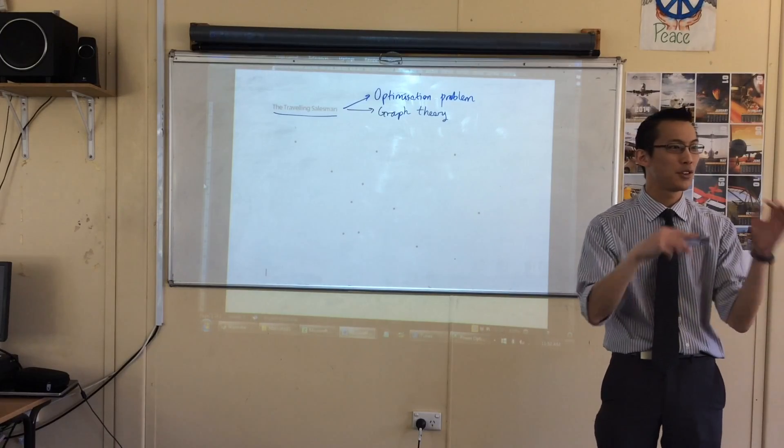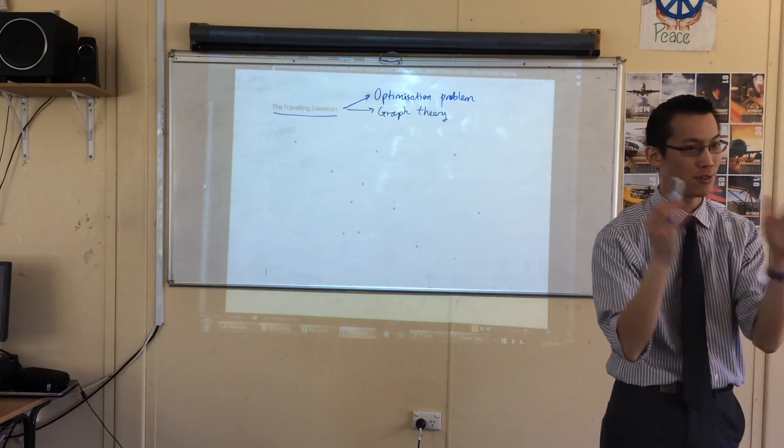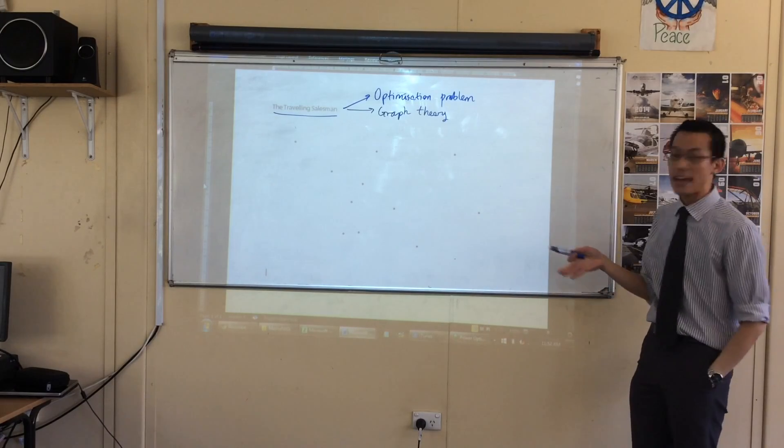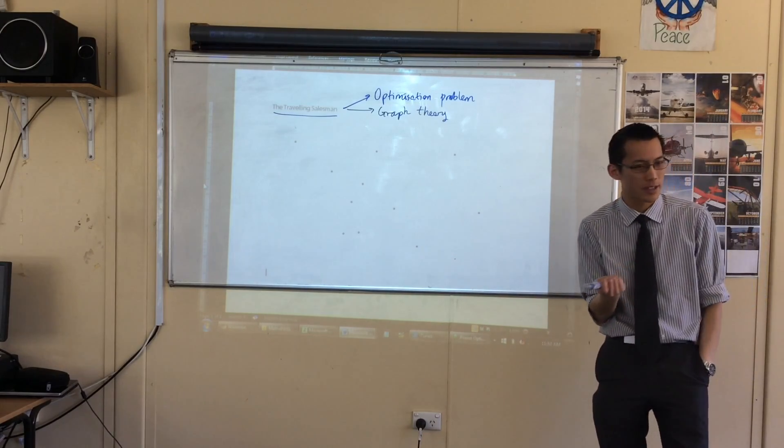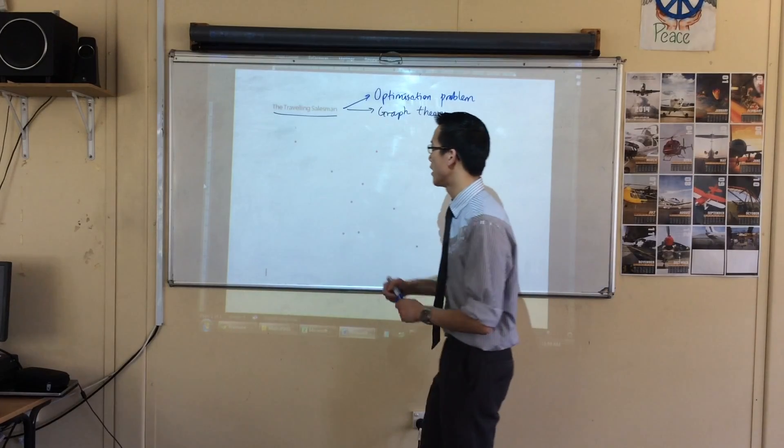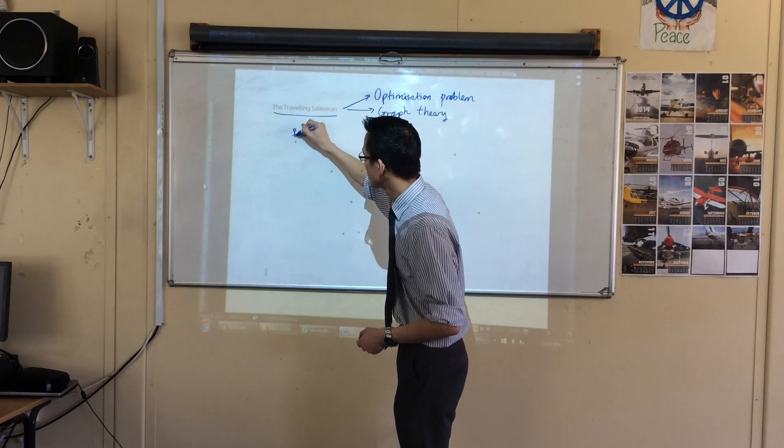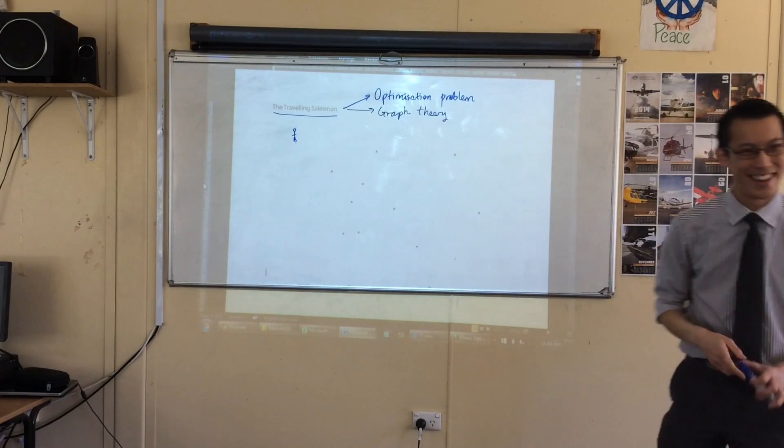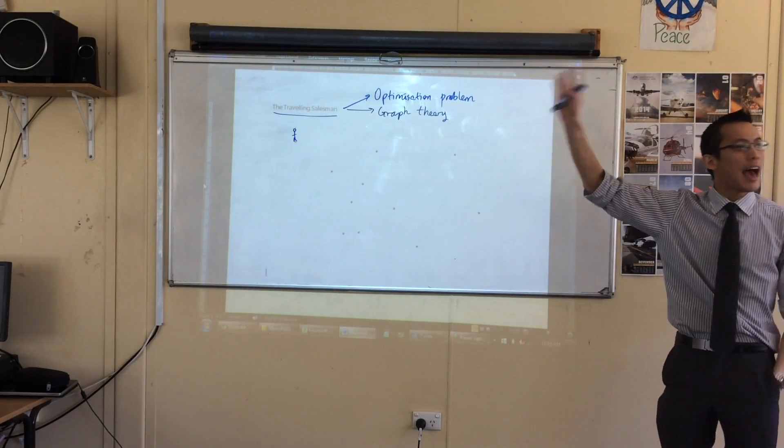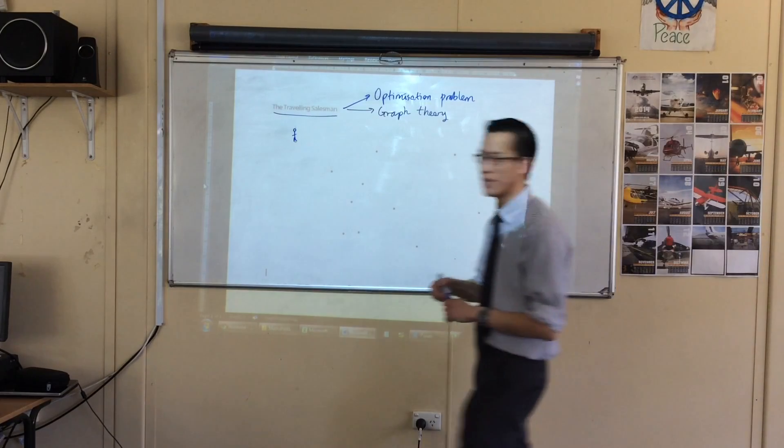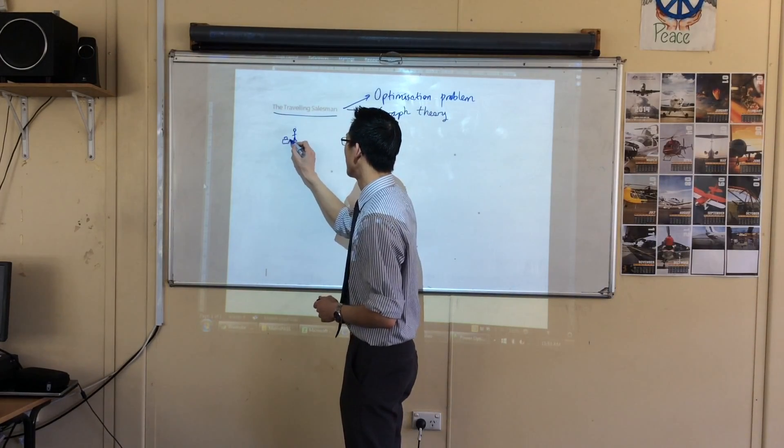So let me give you the traveling salesman problem in a nutshell. These dots here are locations, like cities for example. And there is a salesman. Let's put him over here. Yes, it is compulsory to put a salesman there. There's a salesman and he wants to visit. Yeah, he's traveling, I suppose. So I'll give him a suitcase instead of like a county car.